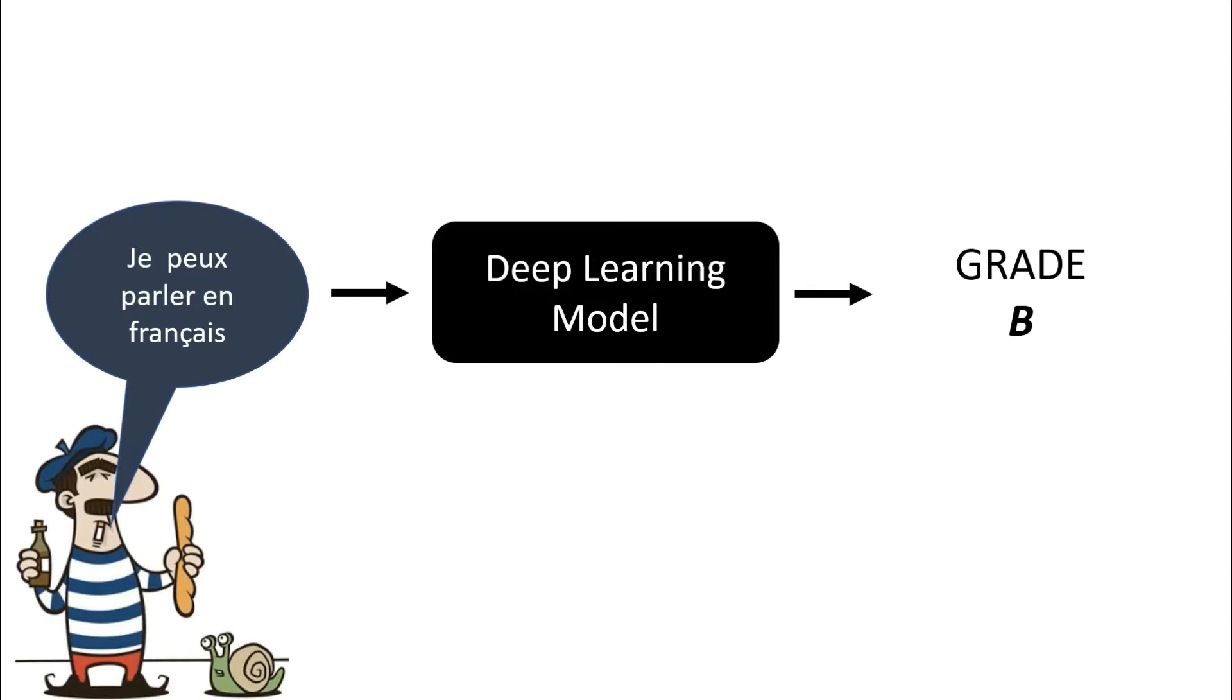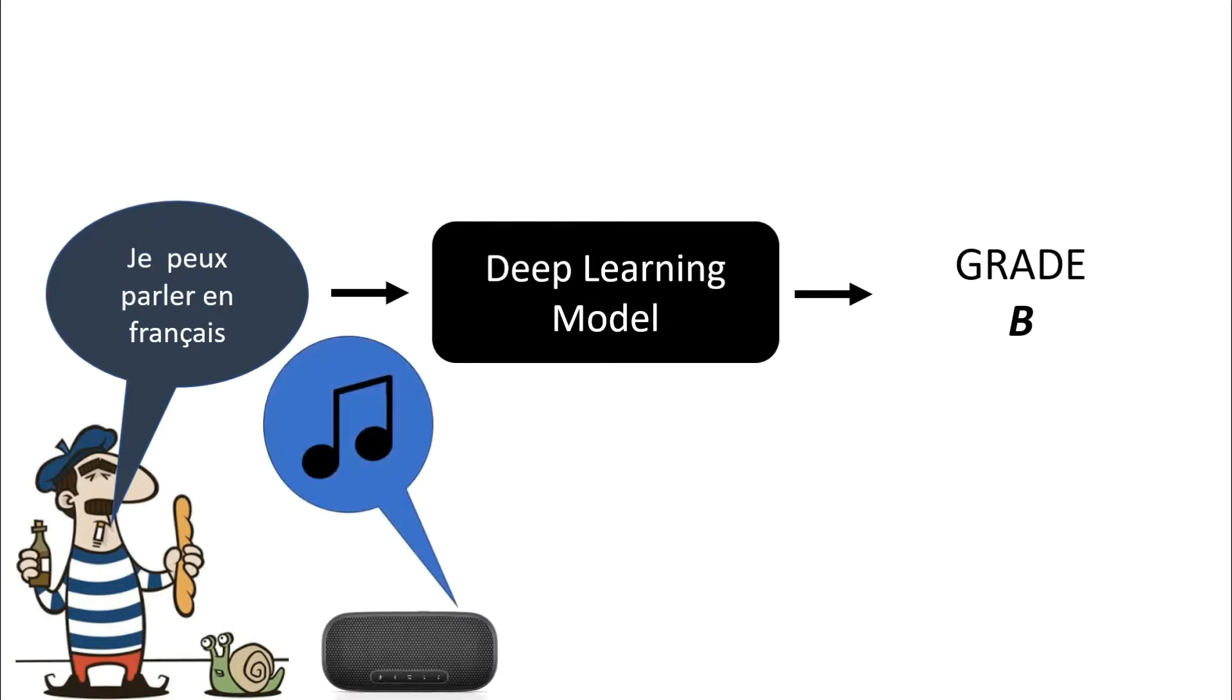However, a student looking to cheat may carry a small speaker with them into the speaking exam that generates a small, imperceptible noise that modifies the overall audio to sound the same to a human but trick the deep learning system into giving the student a very high grade unfairly.